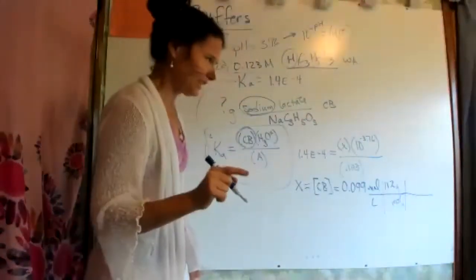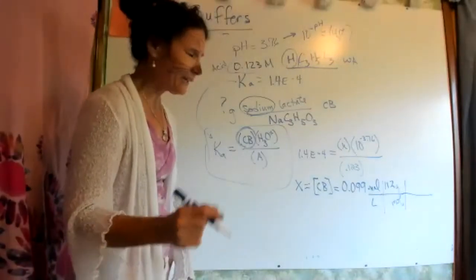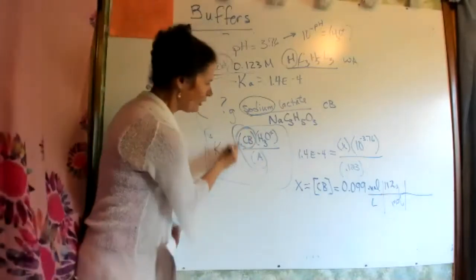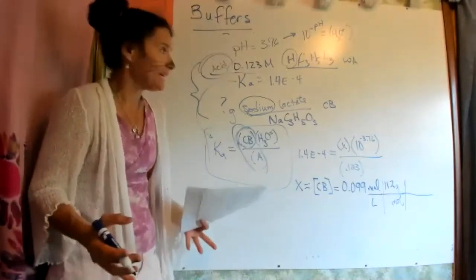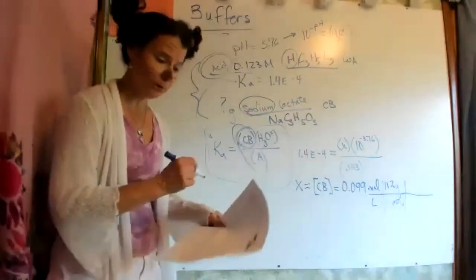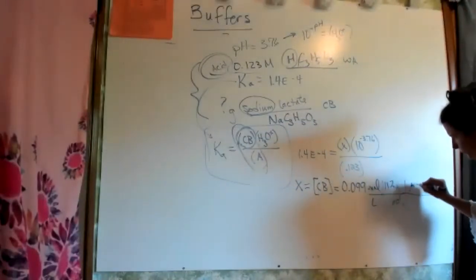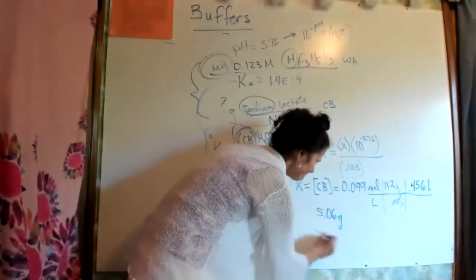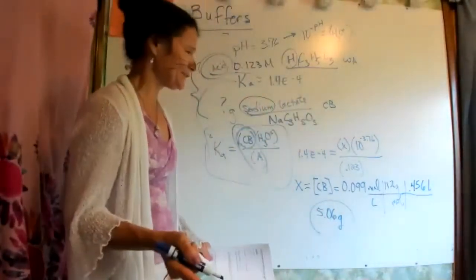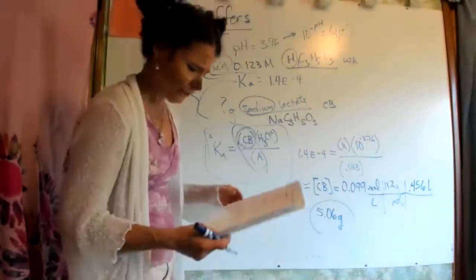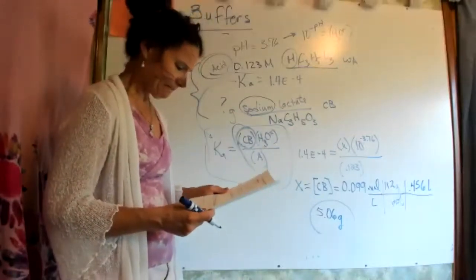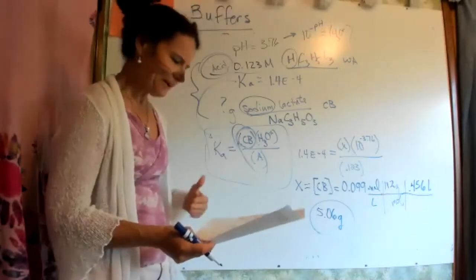The most asked question I get with buffers: the acid and the conjugate base are mixed together in one solution — they are together in one solution. So the volume applies to both of them. The 0.456 liters is what I gave on your handout. Punch that in and you get 5.06 grams. If any of my numbers are wrong, please let me know.